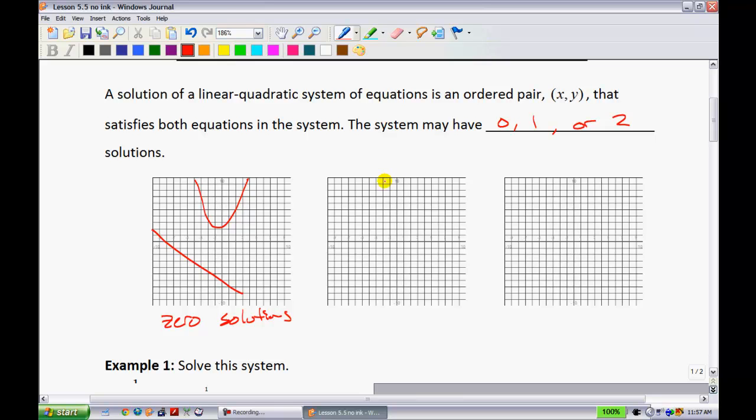Second scenario we can have is a quadratic and a line that just meets at one point. Let's say that point is right here that I highlight with that dot. We would say that this one has one solution.